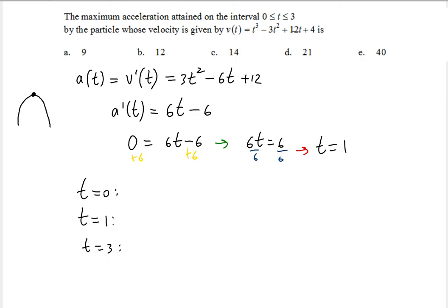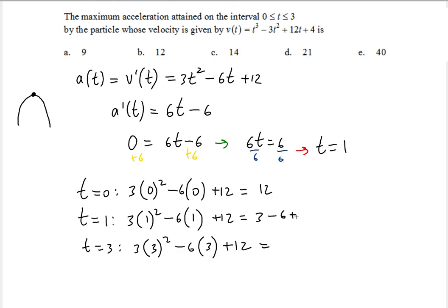t equals 0: we're going to plug this into the acceleration function, so that's 3(0)² minus 6(0) plus 12. For t equals 1: 3(1)² minus 6(1) plus 12. This gives us 12 for t=0 because both of those terms are zero. For t=1, this gives you 3 minus 6 plus 12, so that gives you 6 plus 3, that's 9.